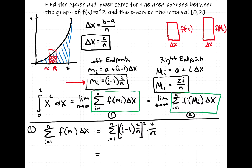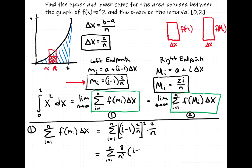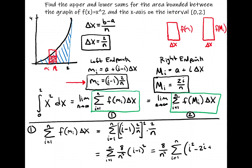Let's square everything and multiply. We'll have the summation from i=1 to n. We get 2² = 4 times another 2, which is 8 on top; and n² times another n on the bottom, giving n³. So we have 8/n³ multiplied by (i − 1)². Since 8 and n³ are constants, we move them out front: 8/n³ times the summation from i=1 to n of (i − 1)², which we expand by FOIL-ing to i² − 2i + 1.